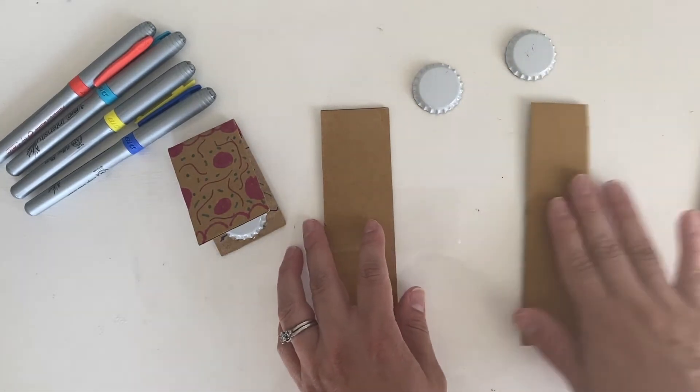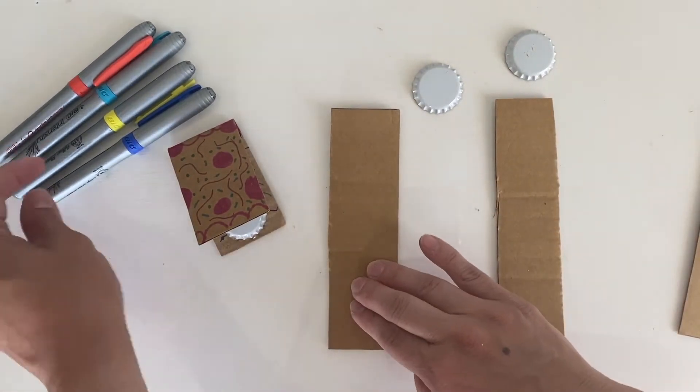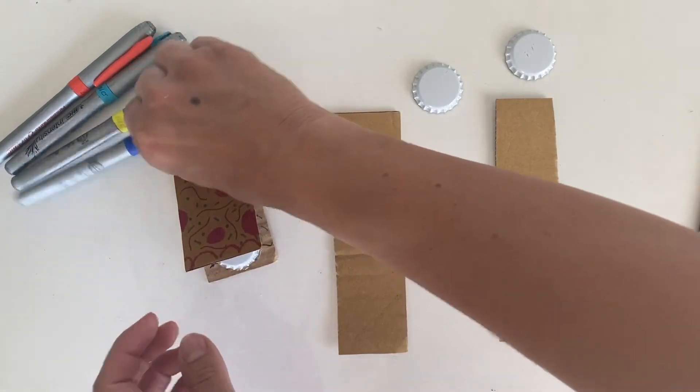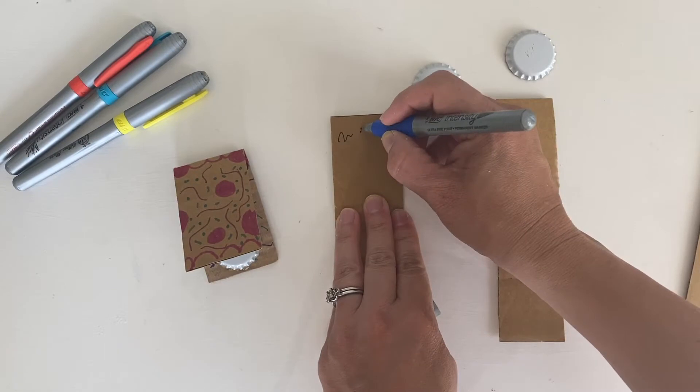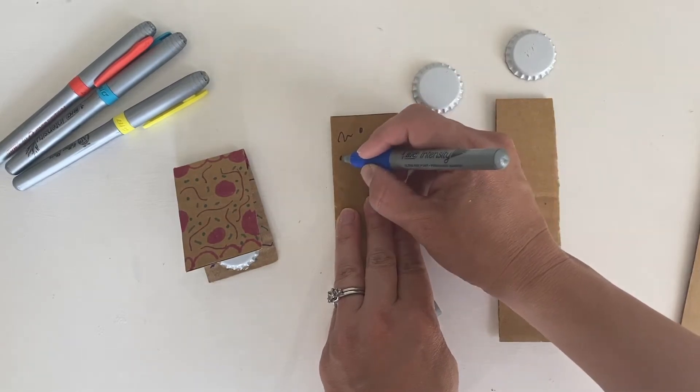Once you have done that, you have a strip to decorate. Go ahead and make your designs. Take your markers, think of any designs that you would like, and decorate your instrument.